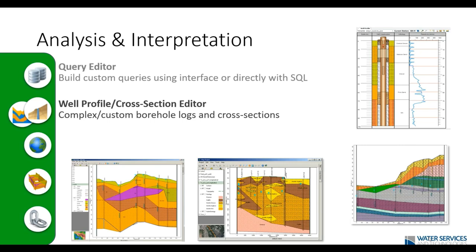Talking about the visualization tools, first we have the Well Profile and Cross-Section Editor, where we can create customized borehole logs — presenting any information with depth, fully customizable images, colors, and so on. We also have a tool specifically for cross-section interpretations, where we can plot water levels, geophysical logs, or any information with depth, and plot interpolated surfaces such as the pit or future pit. In the cross-sections we can have three different interpretations: the geological interpretation, the hydrogeological interpretation, and a specific interpretation for exporting the layers to a hydrogeological numerical model such as Visual Modflow Flex.